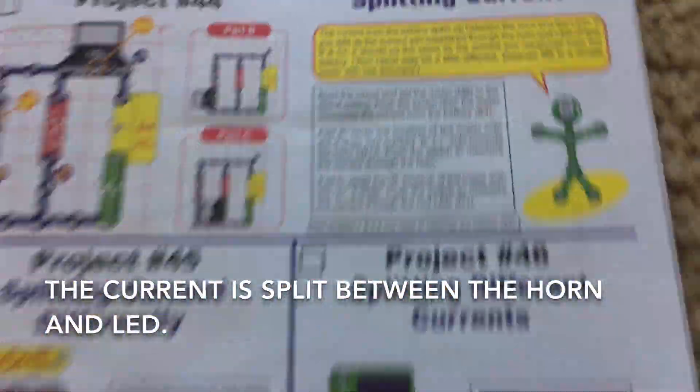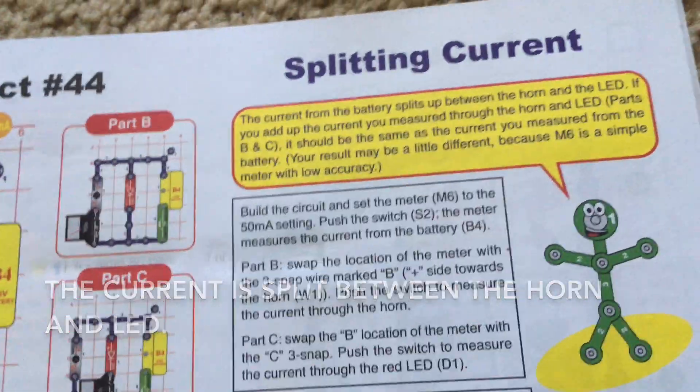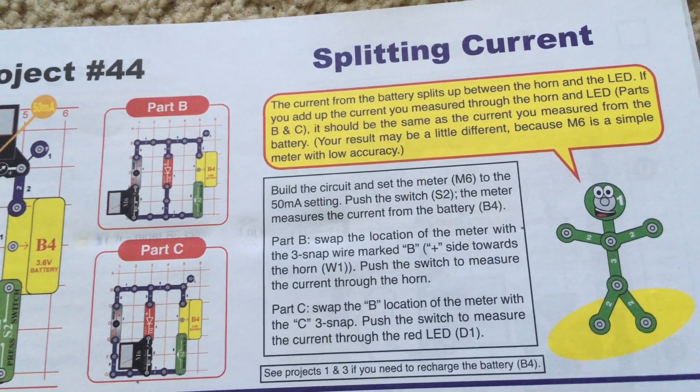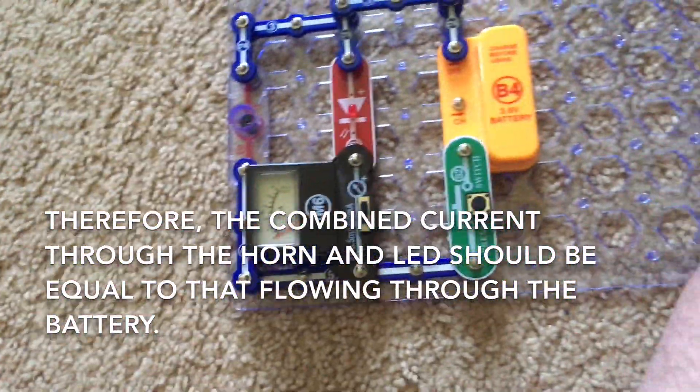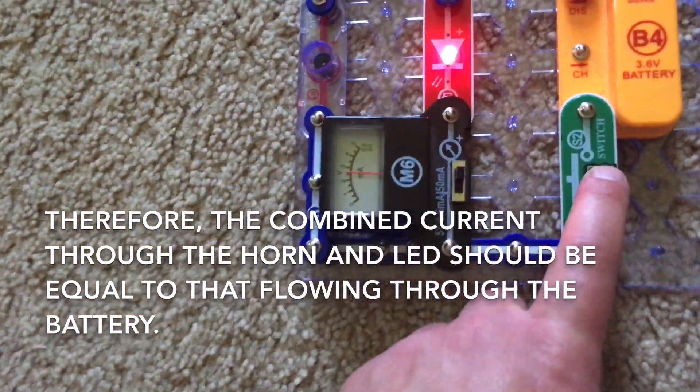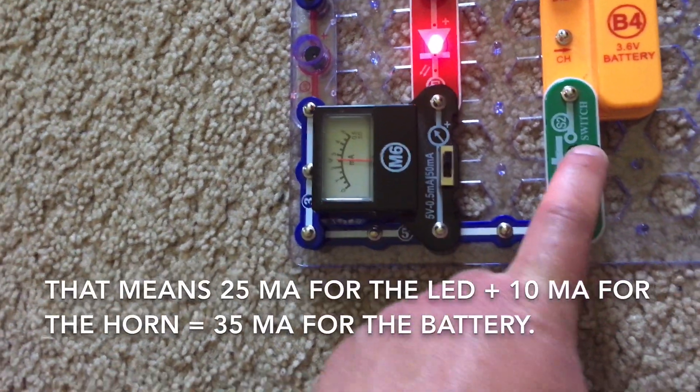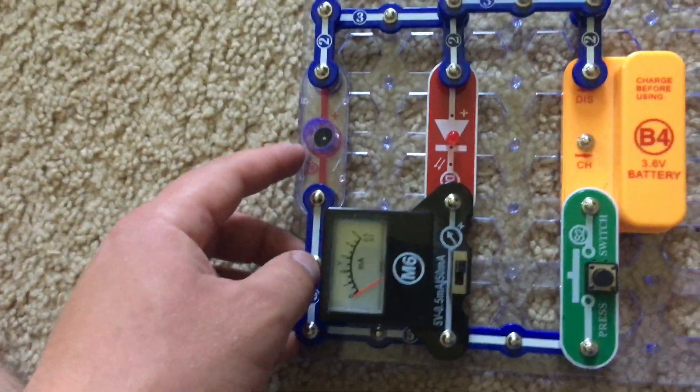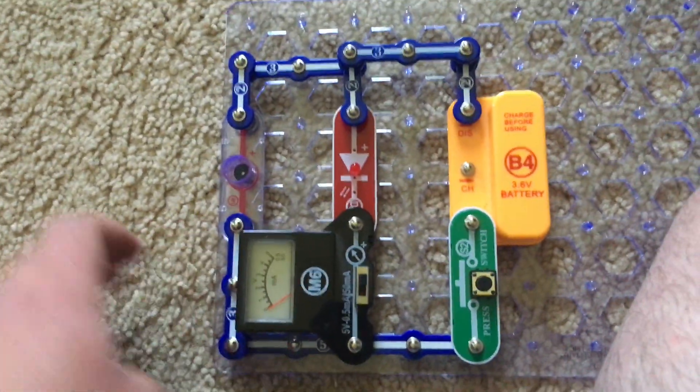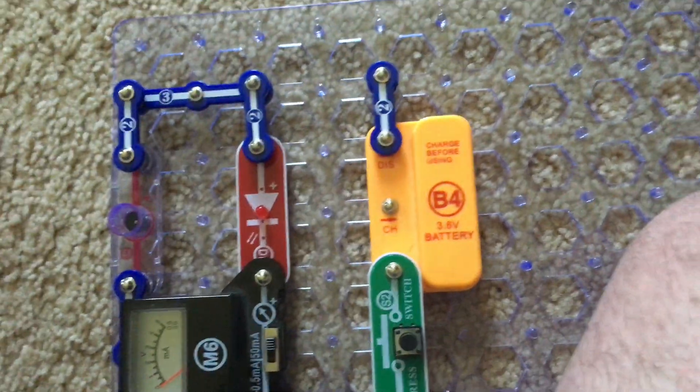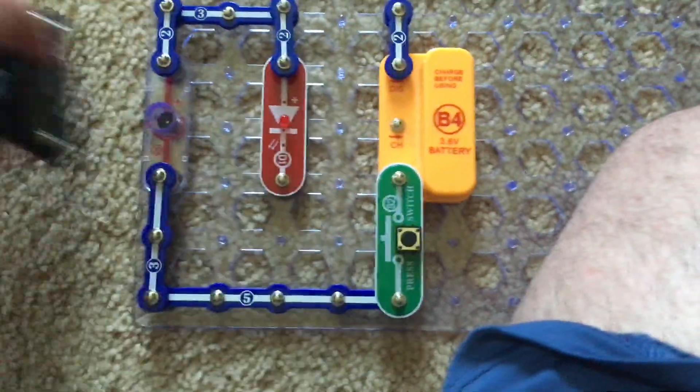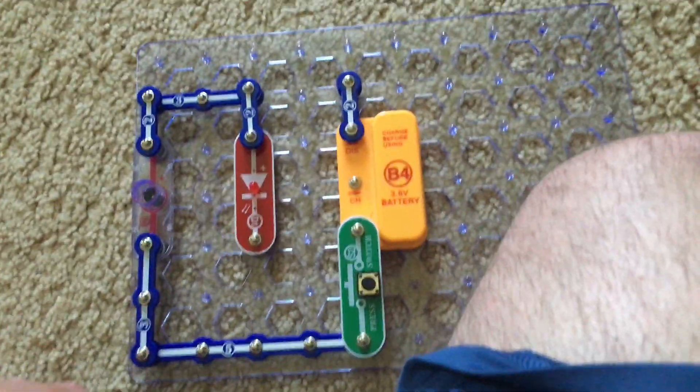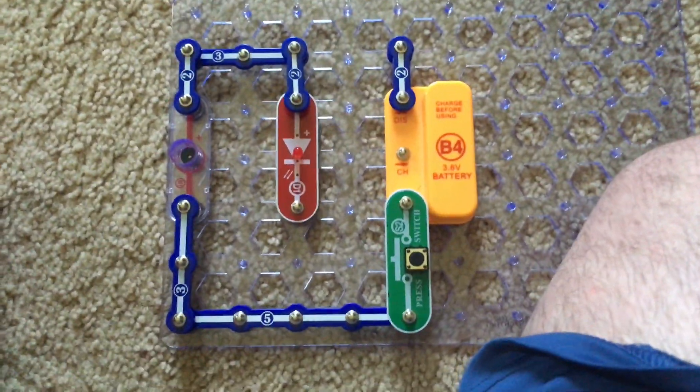So the current from the battery splits up between the horn and LED. If you add up the current you measured through the horn and LED, it should be equal to the current measured through the battery. So 25 milliamps for the LED and 10 milliamps through the horn will equal 35 milliamps in total flowing through the battery. So this is a nice way of knowing how the current in a full circuit is divided among its components.